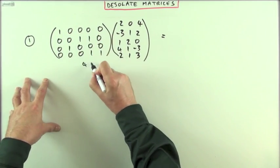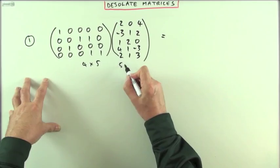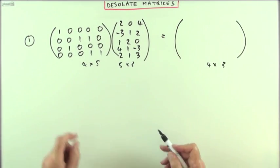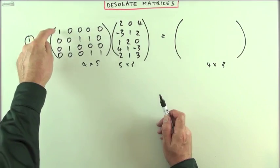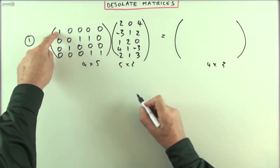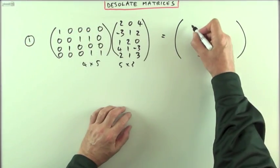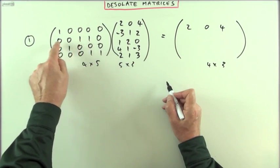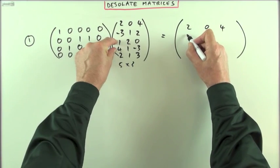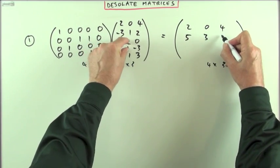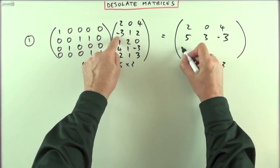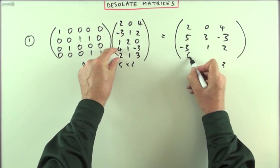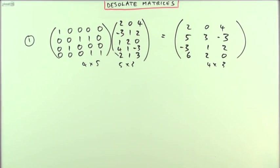The desolate matrix is four-by-five, the other is five-by-three, so I'm looking for a four-by-three answer. As a pre-multiplication using row operations: the first row of answers is just the first row - 2, 0, 4. The next row is the third plus fourth rows added - 1+4=5, 3, -3. The third row is just the second row - -3, 1, 2. The last row is the fourth plus fifth rows - 6, 2, 0.